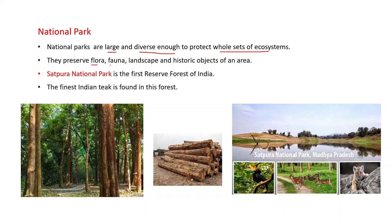National parks preserve flora, fauna, landscape, and historic objects of an area. For example, Satpura National Park — it is the first reserve forest of India. The finest Indian teak is found in this forest; teak is a type of tree. Satpura National Park is located in Madhya Pradesh.